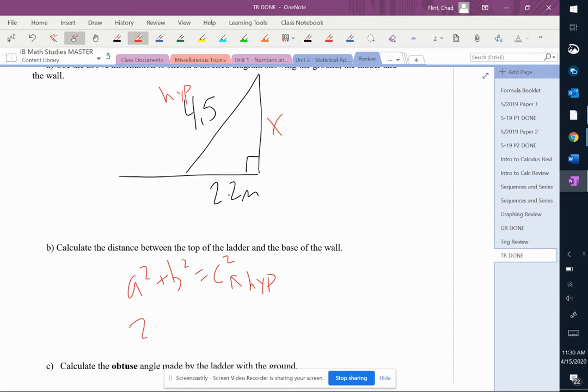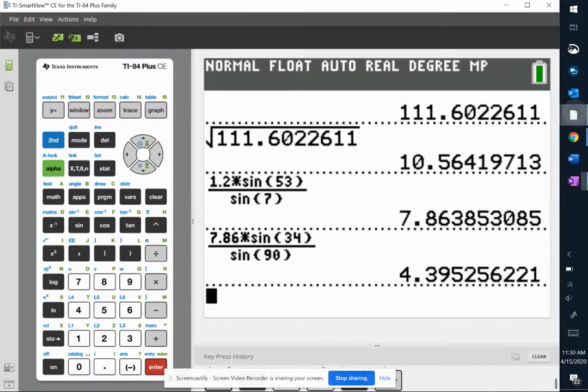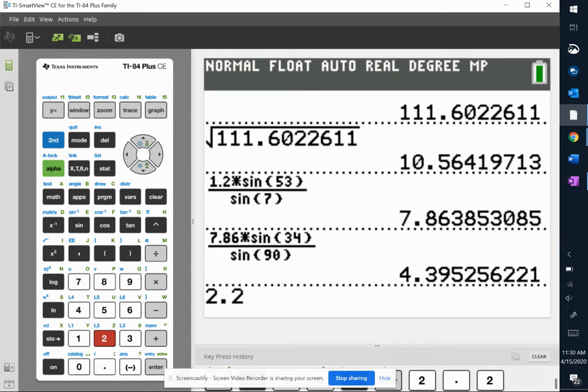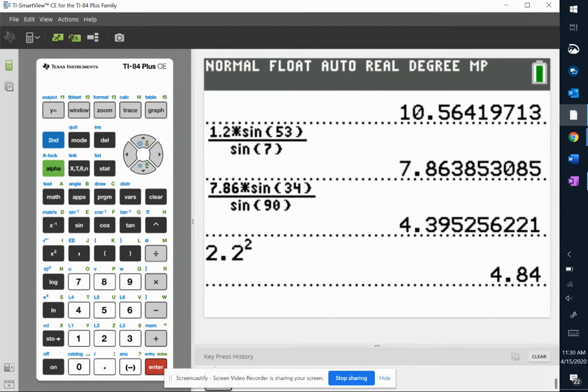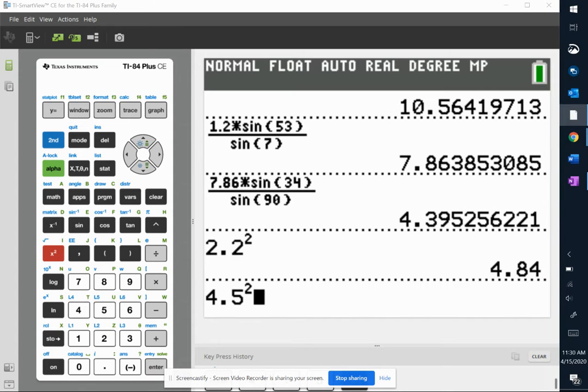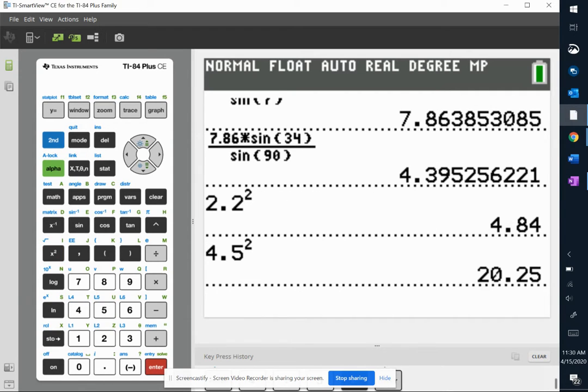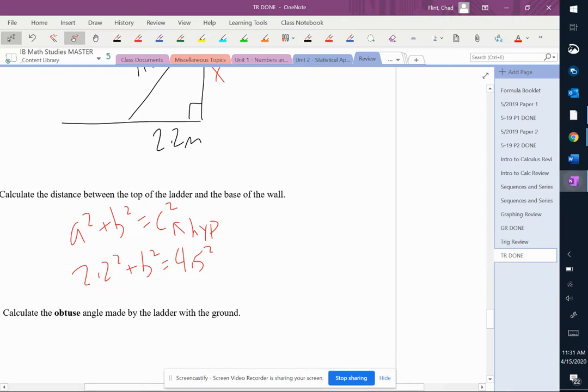So it's going to be 2.2 squared plus B squared equals 4.5 squared. We can do a little algebra here. Let's square these: 2.2 squared is 4.84 and 4.5 squared is 20.25. So 4.84 plus B squared equals 20.25.